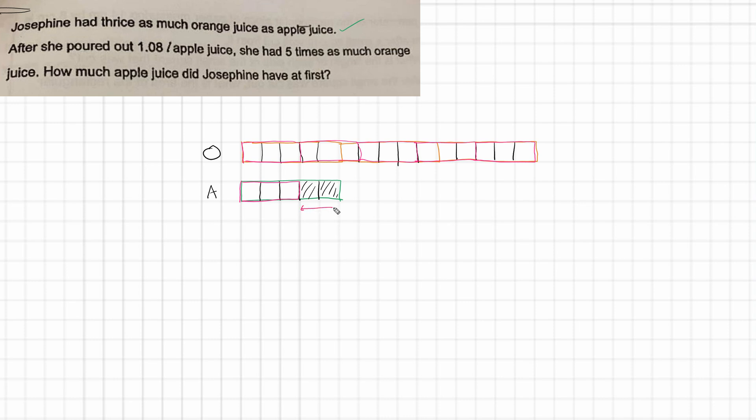So this must be the amount of apple juice that was poured away. And we know that is equal to 1.08. That means that we can work out the value of each of these. So we have 1.08. If we divide that by two, we get 0.54.